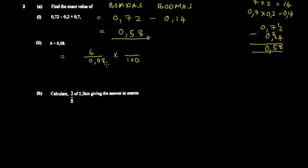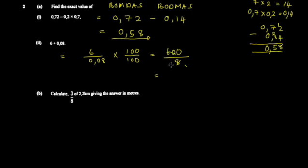If we multiply the bottom by 100, we must multiply the top by 100 as well to maintain the value. So it becomes 600 divided by 8. Doing the division: 8 into 60 gives 7 remainder 4, then 8 into 40 gives 5 — so the answer is 75.